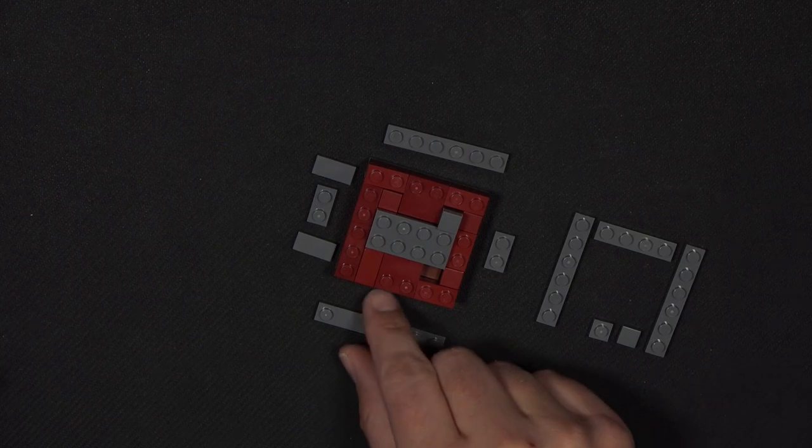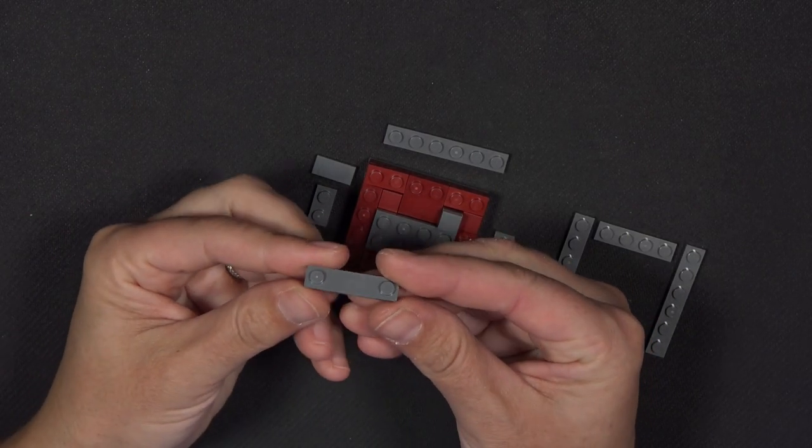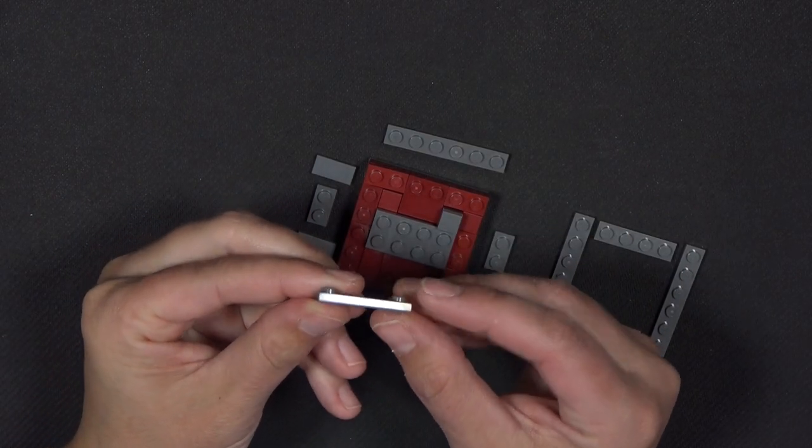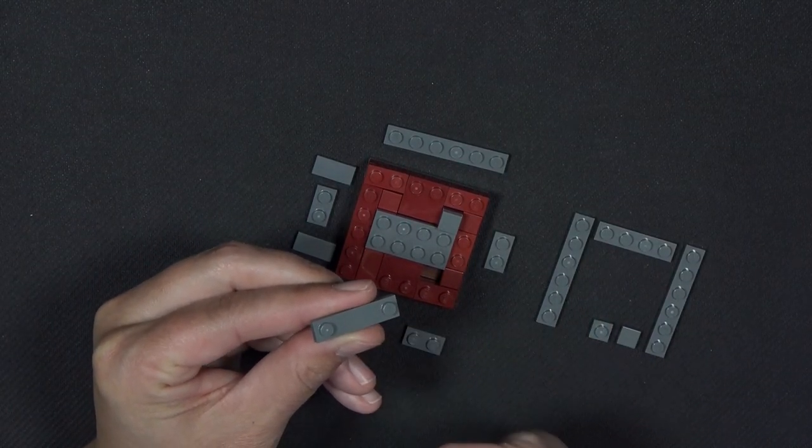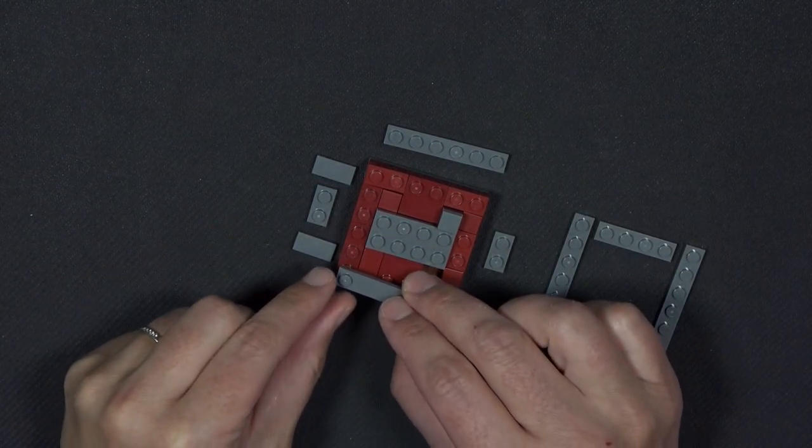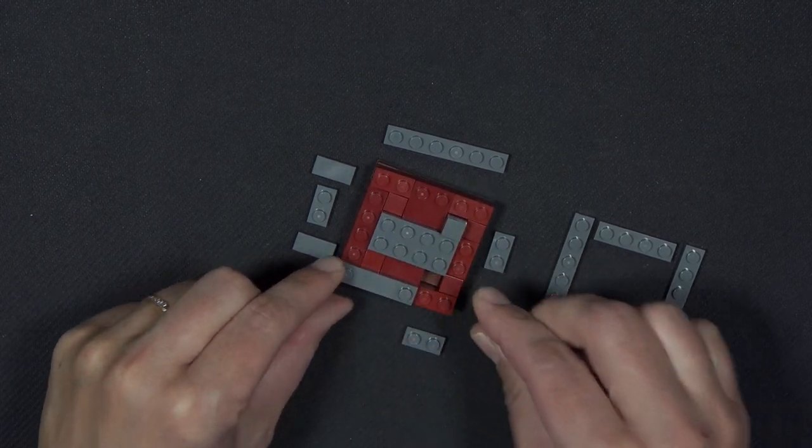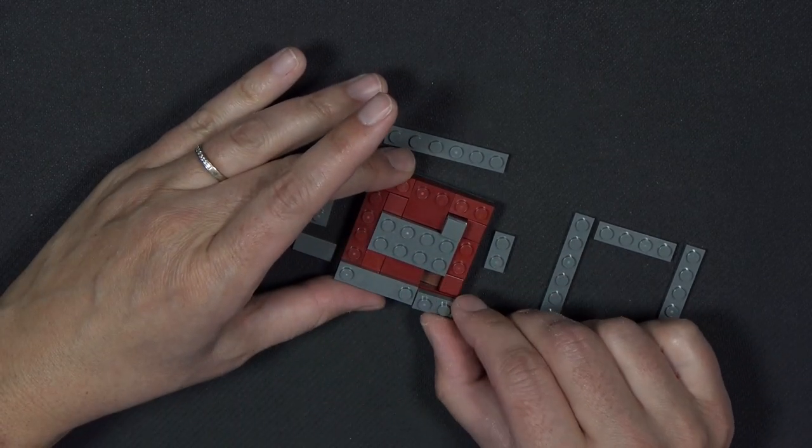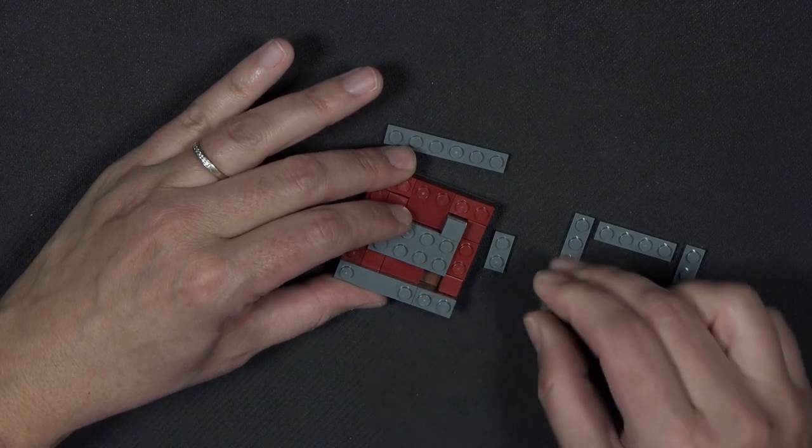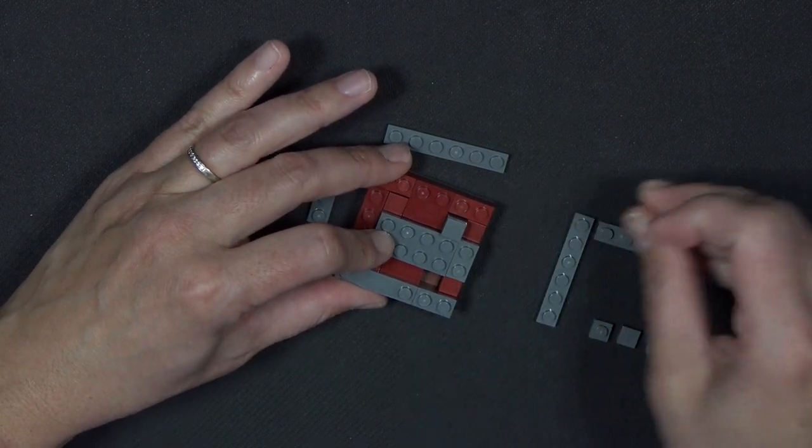I have another layer. We will start with this 1x4 modified plate. It's got the studs on the side and then open space in between. And this one will sit right here. This 1x2 plate goes here, another 1x2 plate there.